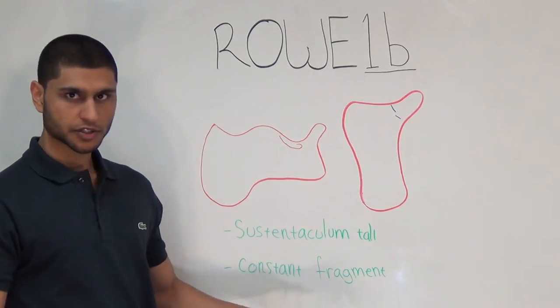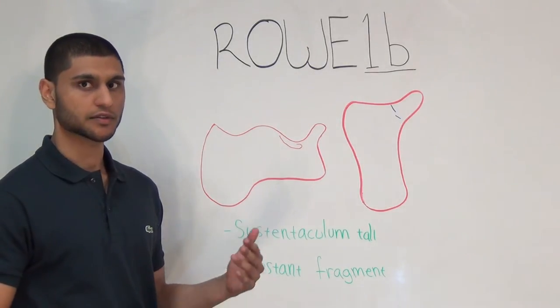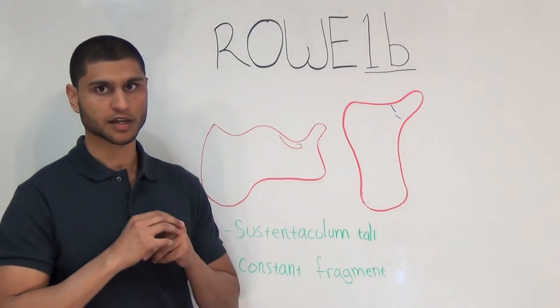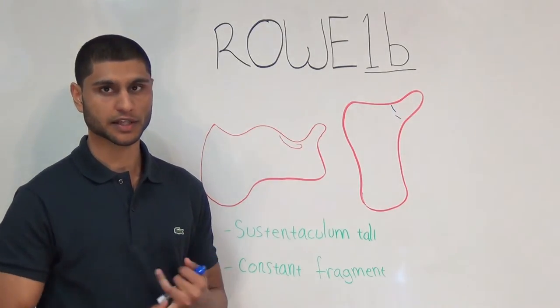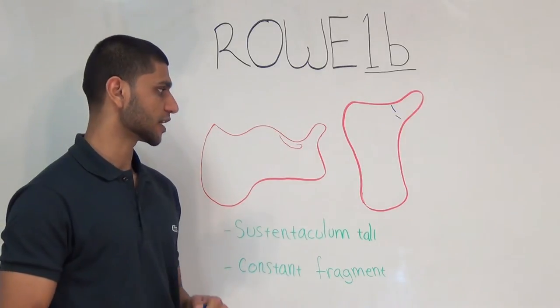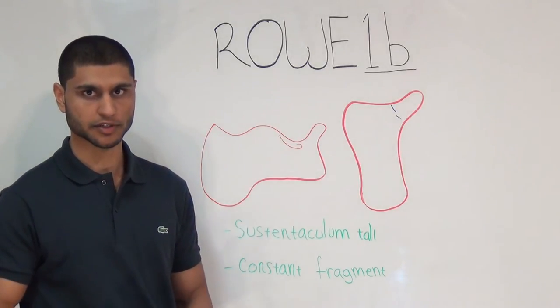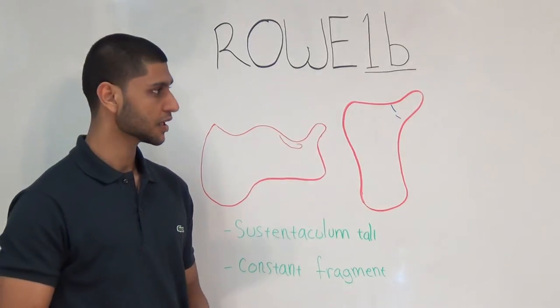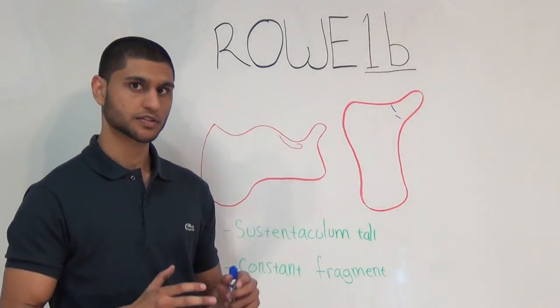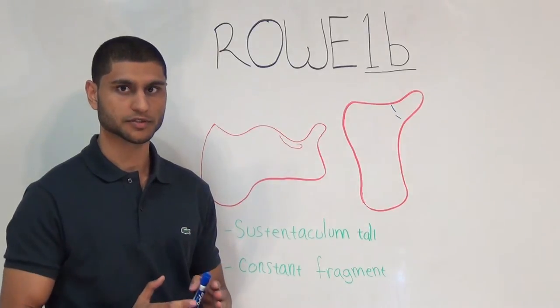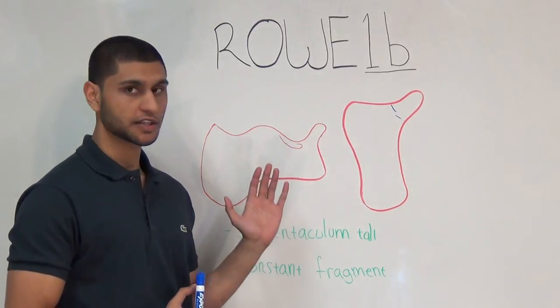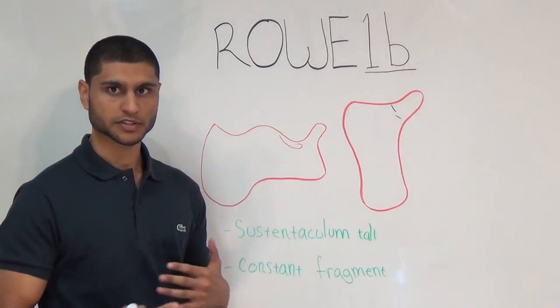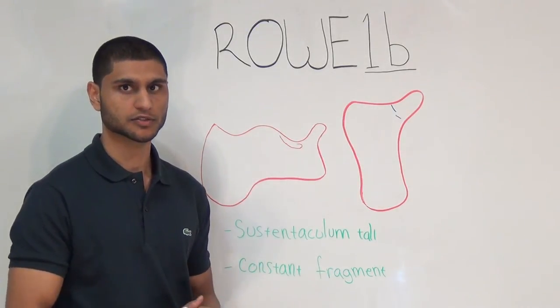Now, when you guys take surgery, you're going to learn about this concept of the sustentaculum tali as being the constant fragment. The reason the sustentaculum tali is constant is because it's held very tightly in place by a number of tendons and ligaments—tendons such as FHL, FDL, and tibialis posterior, and ligaments such as the spring ligament and part of the deltoid complex. During the calcaneal fracture, the sustentaculum tali itself does not move very much. Rather, it's better to think that the calcaneus moves away from it. So when you're doing surgery, your frame of reference for all your fixation is actually the sustentaculum tali, and that's why it's called the constant fragment.